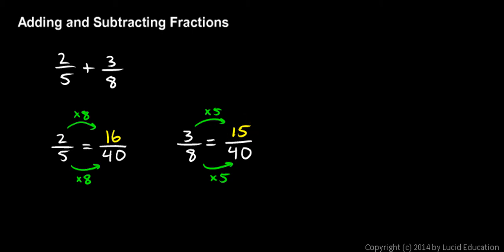And now we can add the two fractions because they're like fractions. Instead of trying to add 2 fifths and 3 eighths together, I can add the 16 over 40, because that's equal to 2 fifths, and the 15 over 40, because that's equal to 3 eighths. And I can add those up directly.